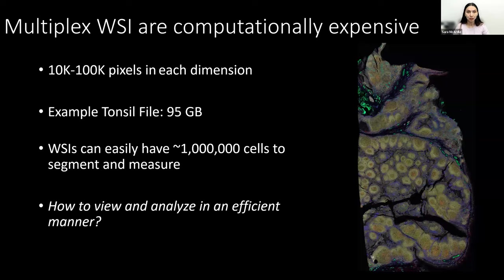I prefer QPath specifically because multiplex whole slide images are computationally expensive. It is common for slides to be 50 or 100,000 pixels in both dimensions, leading to around 25 billion pixels total. The example tonsil file I've shown is 95 gigabytes, and it can easily have a million cells to segment, phenotype, and measure. Finding a way to view and analyze this data in an efficient manner is quite a challenge.